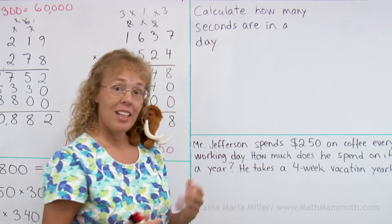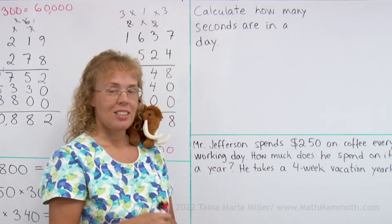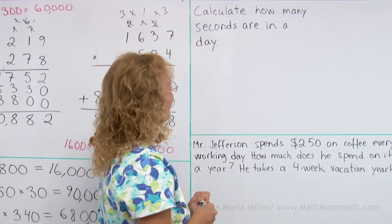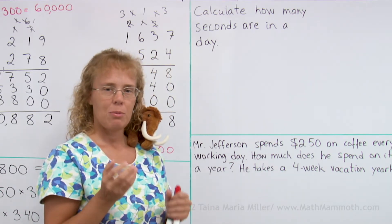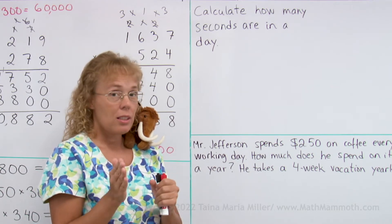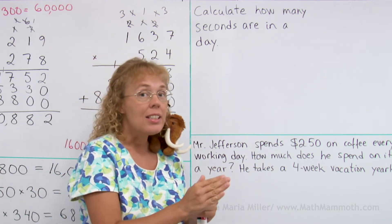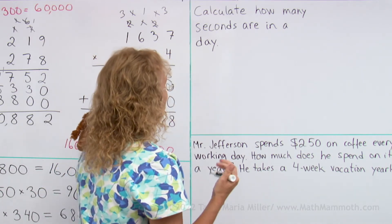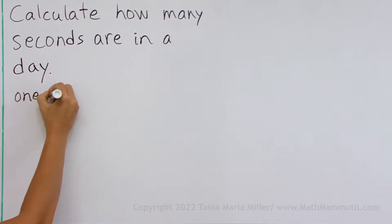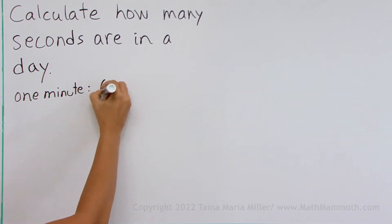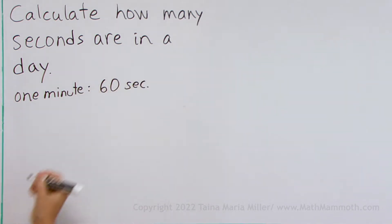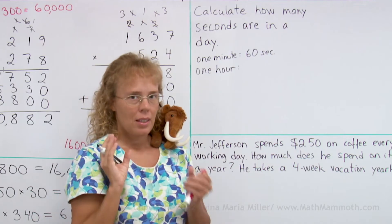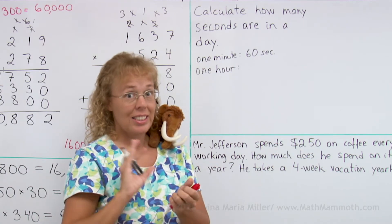Let's calculate how many seconds are in a day — seconds go pretty fast! How would we get started? Well, one minute is 60 seconds, and one hour is 60 minutes.